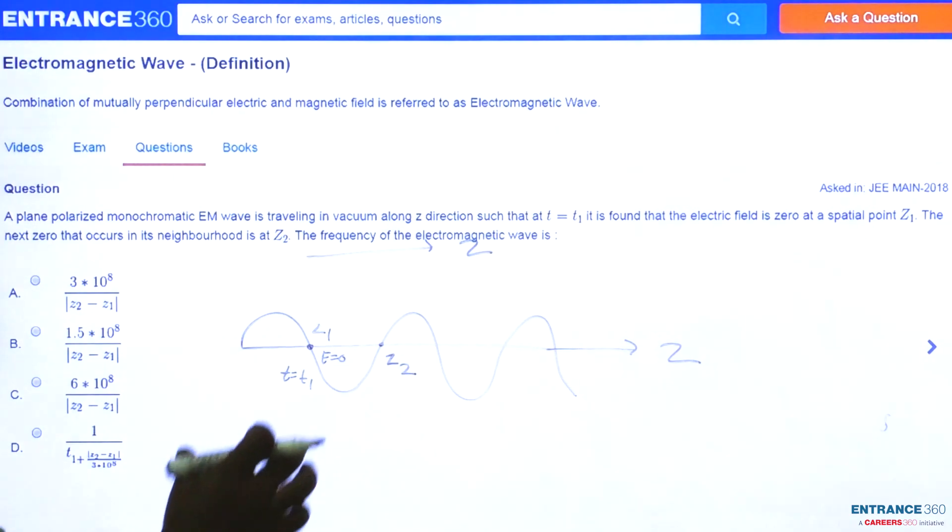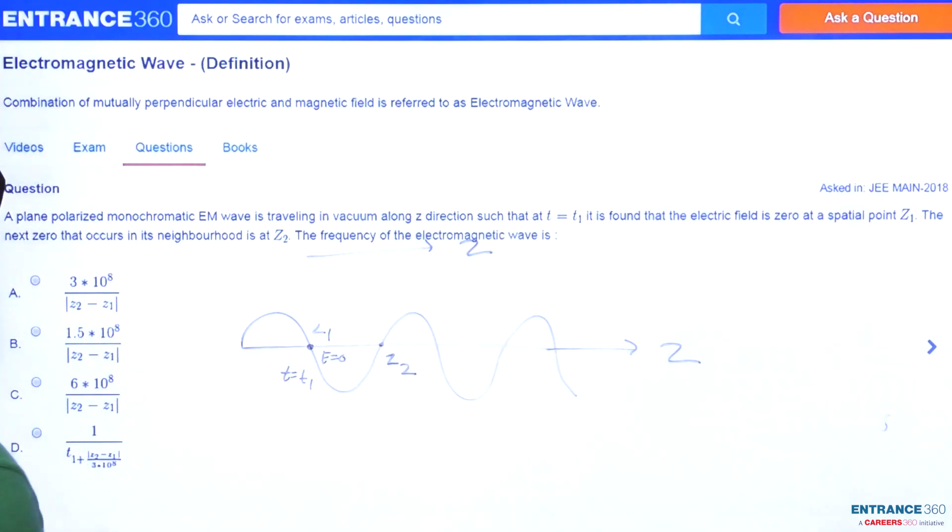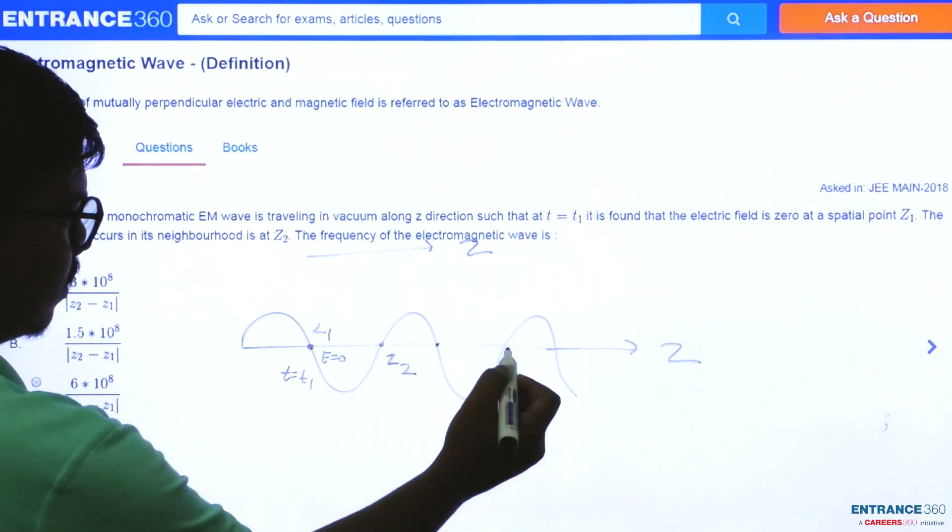So after reading the question we get z1 and z2 as two points where we get electrical field as 0, and this is the third quantity where electrical field is 0. This is the next.